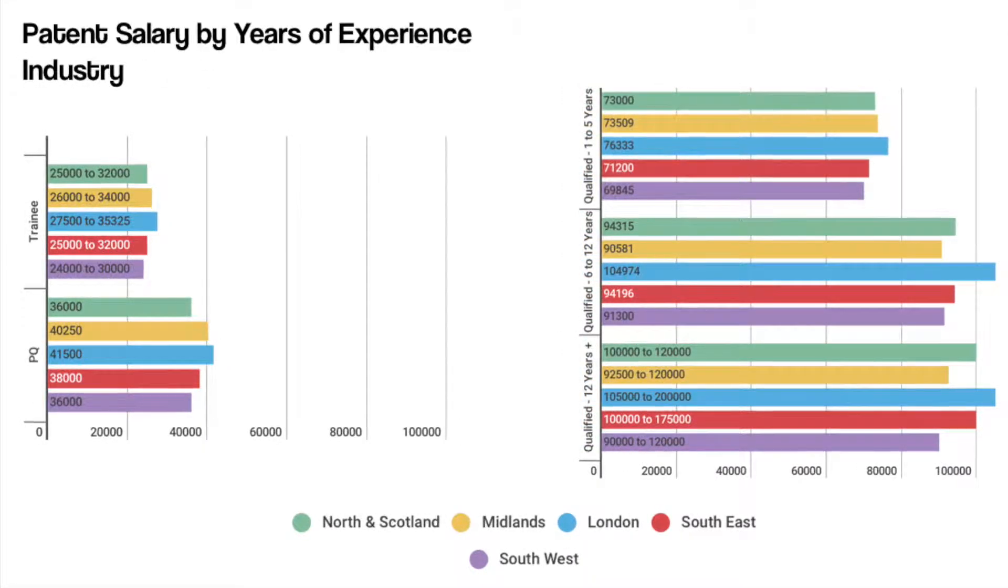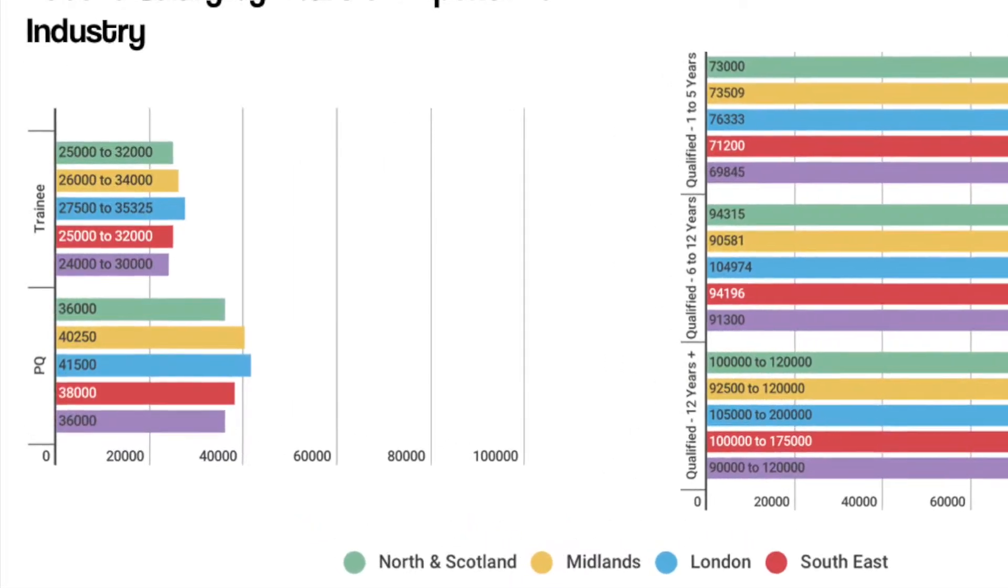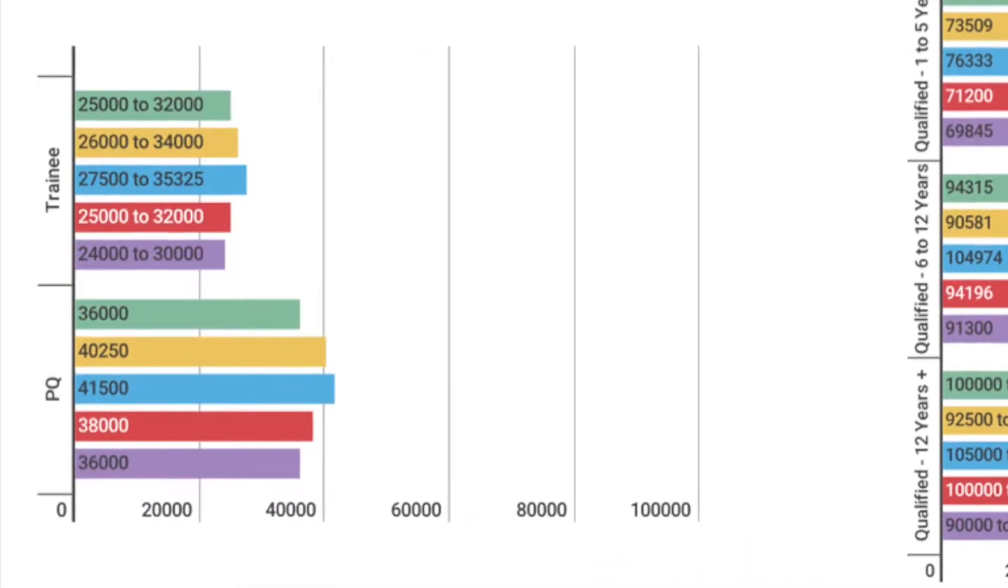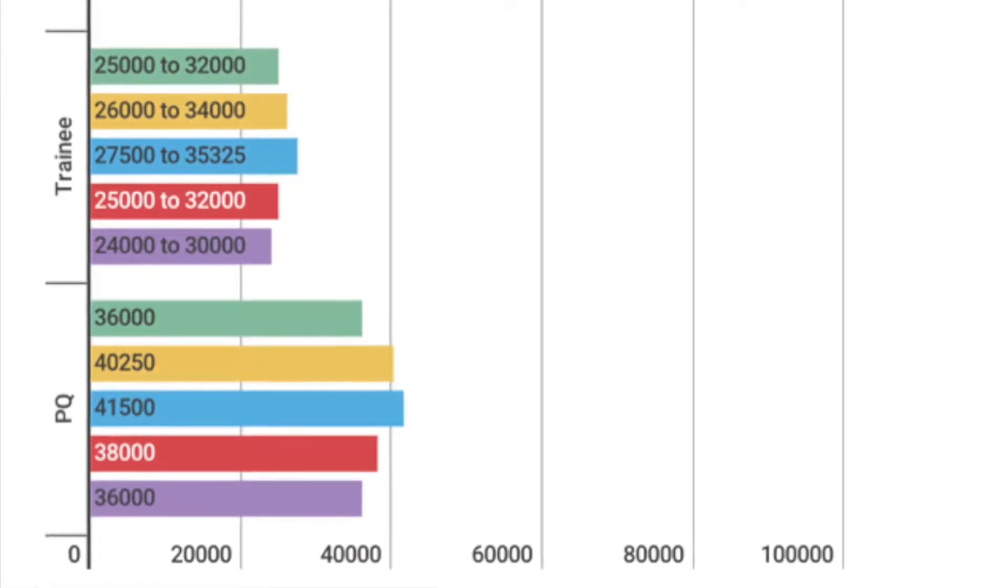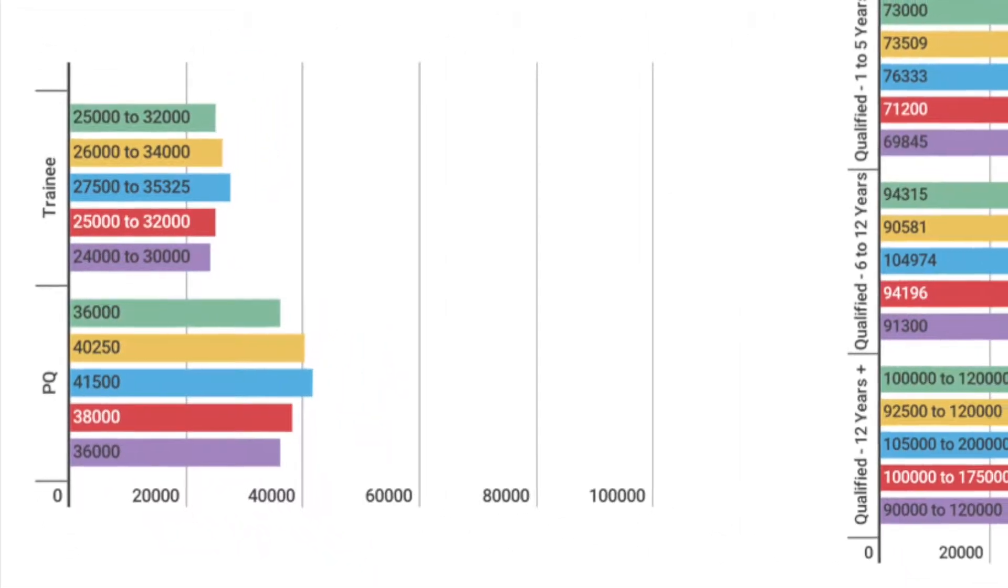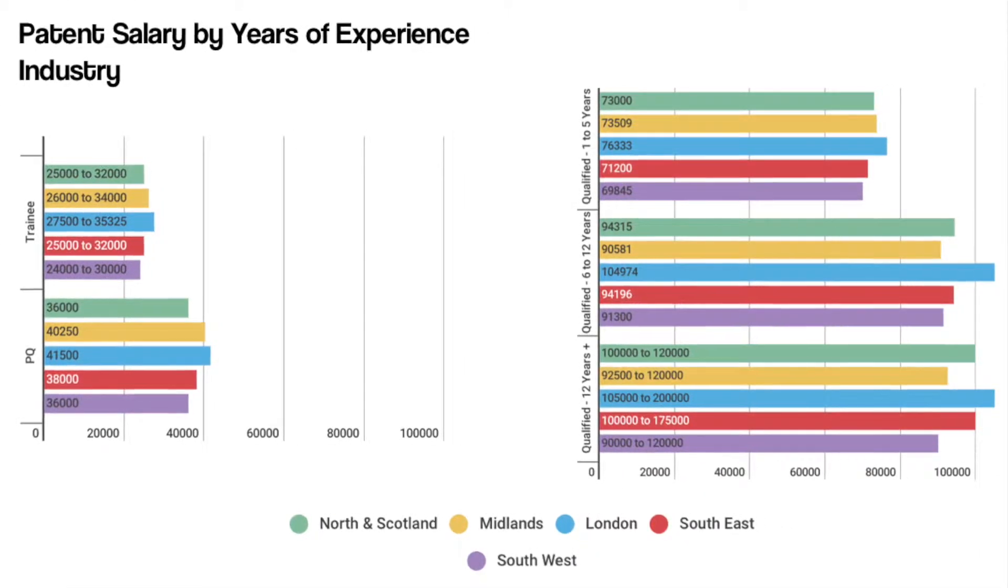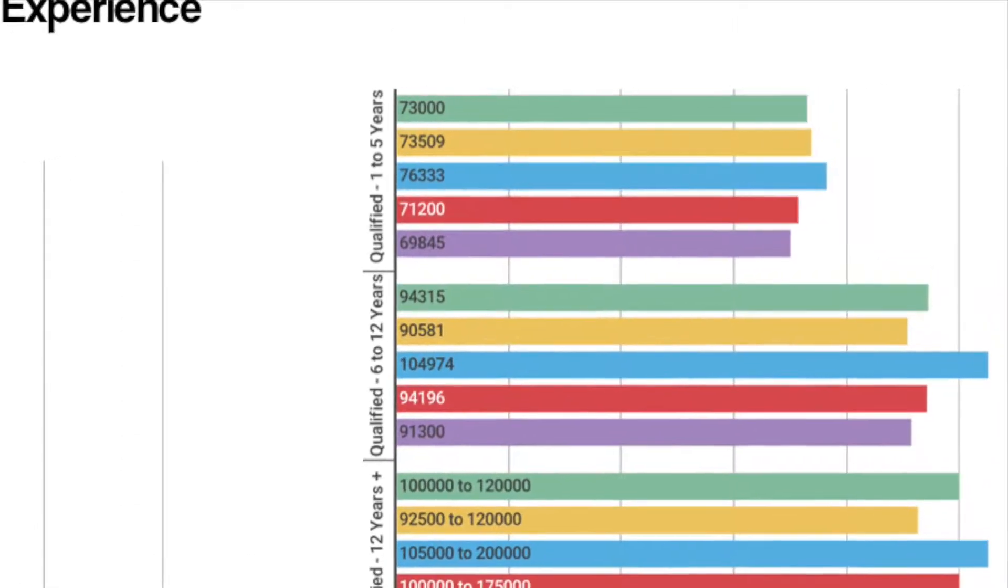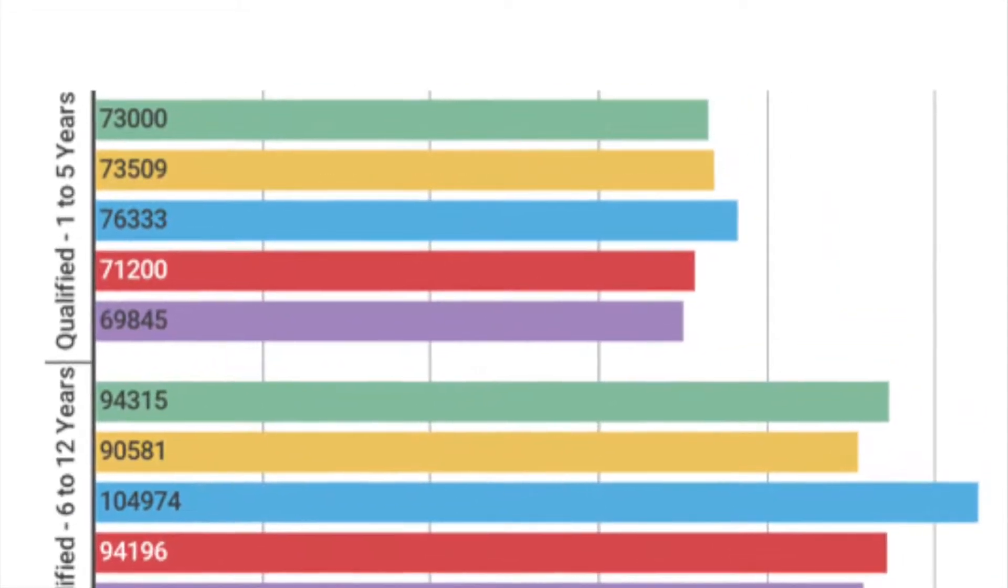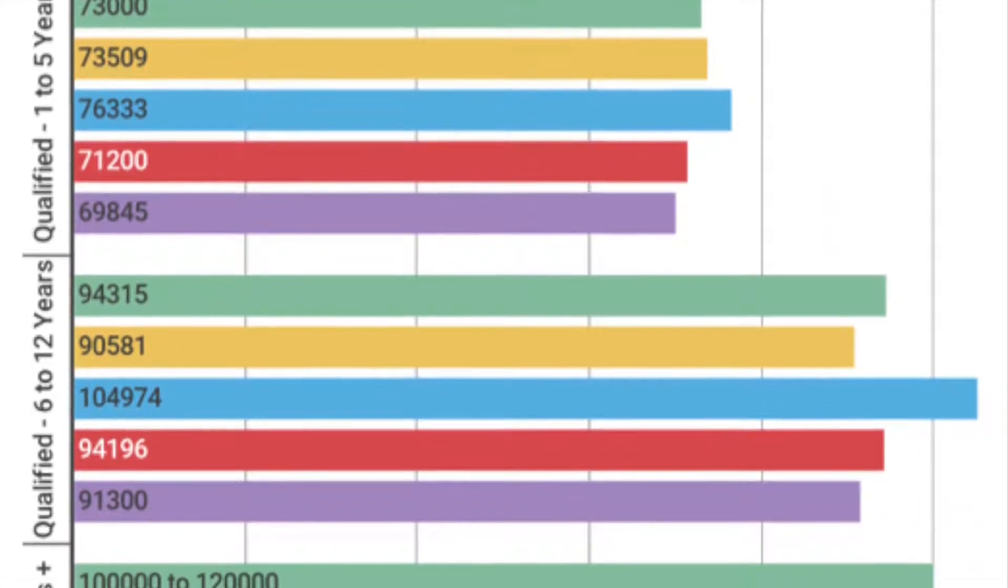The salary levels for patent professionals in industry rise comparatively to those in private practice until we reach the 6 to 12 years qualified level. There is a huge £10,000 difference for London based professionals compared to the other regions in this bracket. We also noticed at the more experienced end the potential to earn higher bonuses as an overall remuneration package, which comes at no surprise.